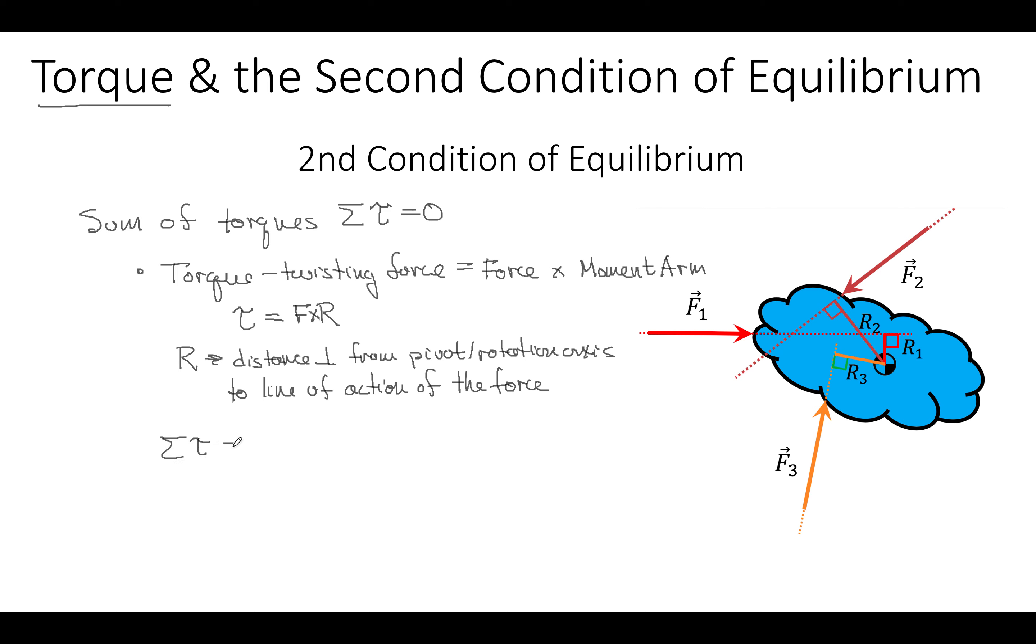So applying what we know, the sum of the torques, which is tau 1 plus tau 2 plus tau 3, which can be written as force 1 times its moment arm, force 2 times its moment arm, and force 3 times its moment arm. Finding these things first is usually the difficult part. Add those all together, you've got to get zero, which then implies that some of these torques are positive and some are negative.